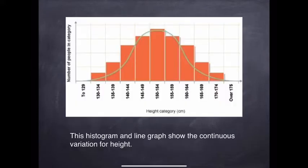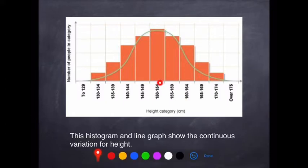This is what the graph would look like — we call this a bell curve. It's narrow at either end and the majority of individuals have the median values. You have a few people who are very short, a few who are very tall, but the majority of people are average. That is a bell curve.